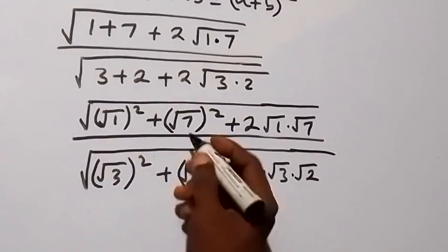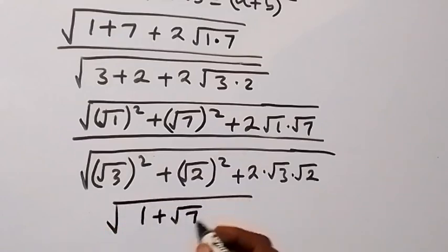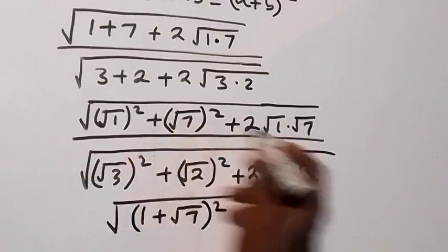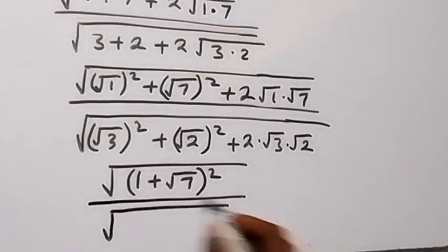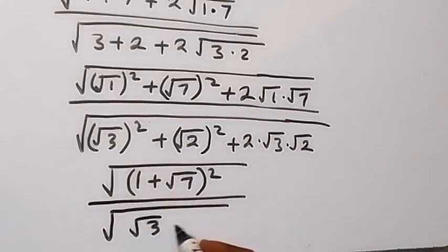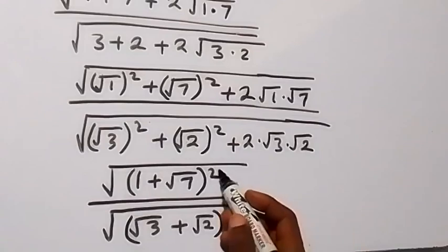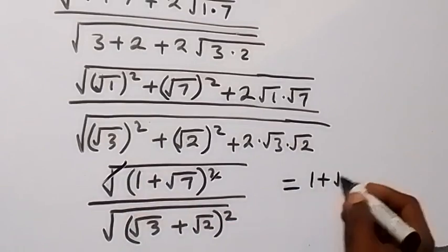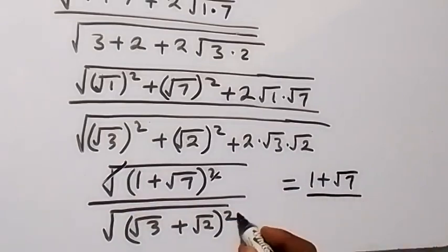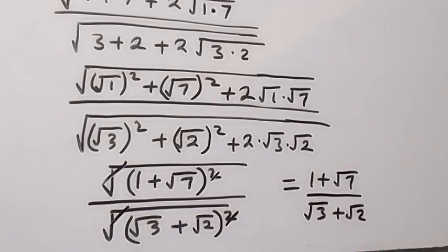In the numerator, a is root 1 — which is 1 — and b is root 7. So we have square root of 1 plus root 7, all squared, in the numerator. Then divided by — from the denominator — a is root 3 and b is root 2. So we have square root of root 3 plus root 2, all squared. Now the square and square root cancel, leaving 1 plus root 7, divided by root 3 plus root 2.